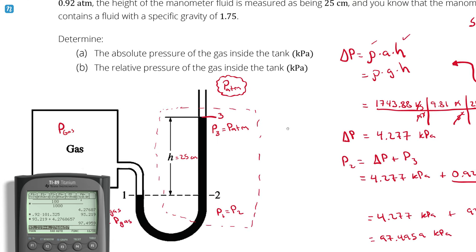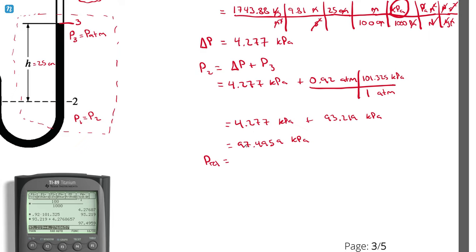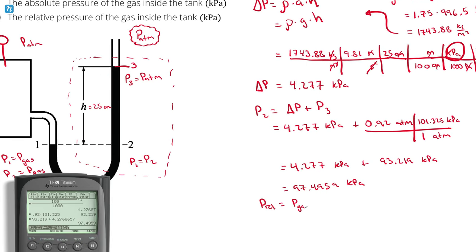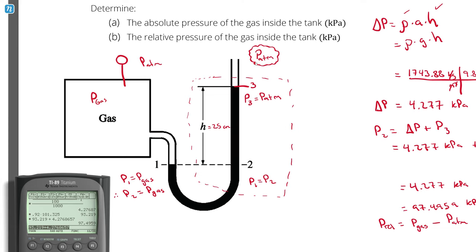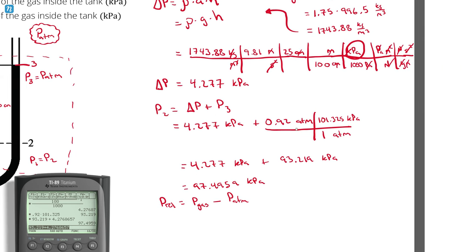Now, is that an absolute or a relative pressure? Relative pressure, or gauge pressure, is what a gauge would measure — the difference in pressure between the gas and the atmosphere. So relative pressure equals P_gas minus atmospheric pressure. The value I calculated, 97.496 kPa, already contains the atmospheric pressure as a term. Therefore, this answer is an absolute pressure, which is the answer to part A.